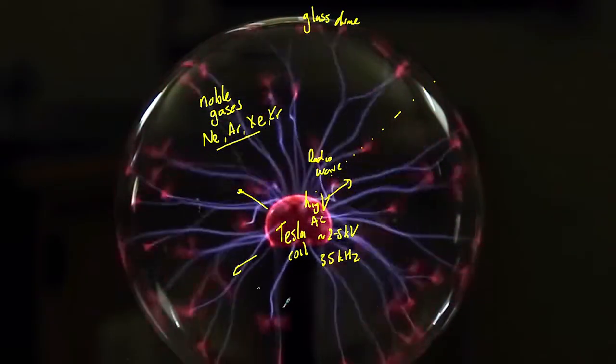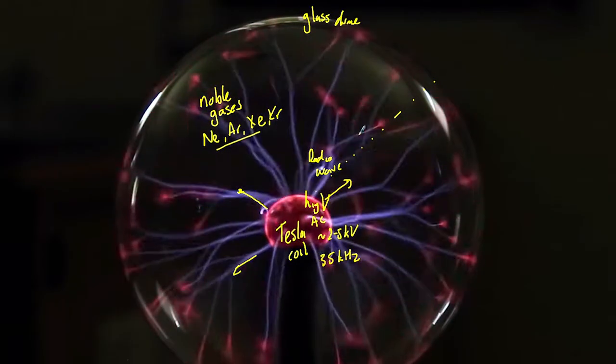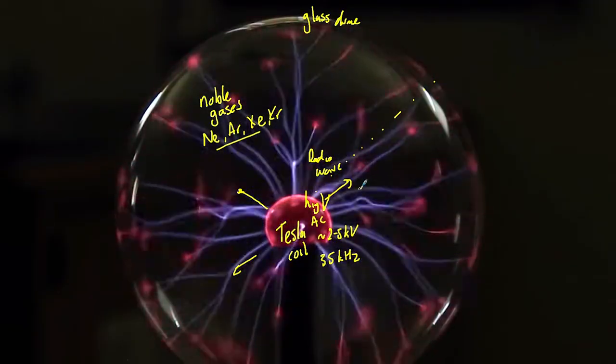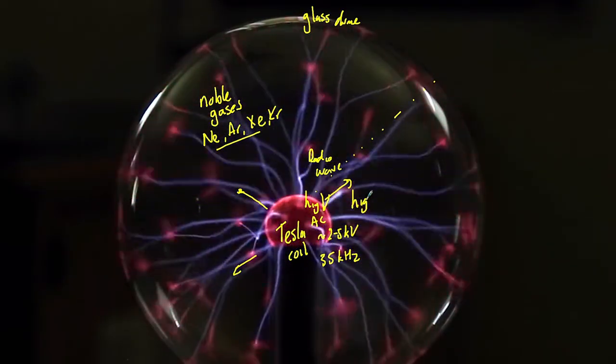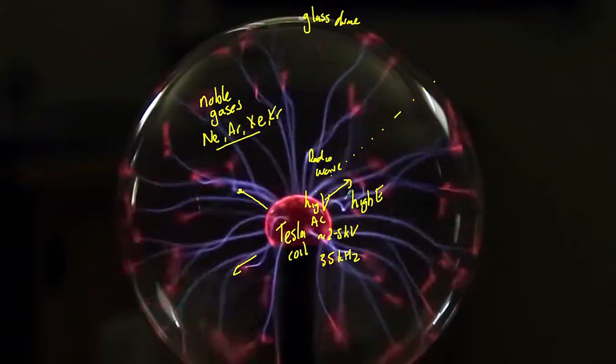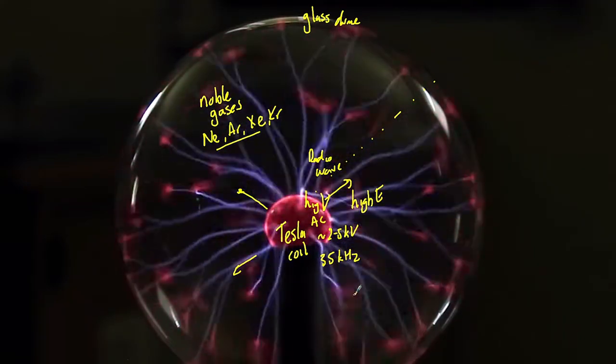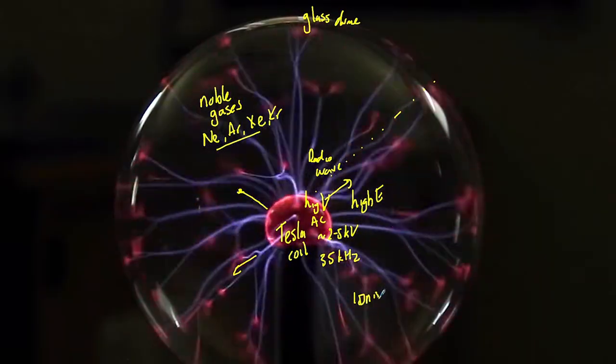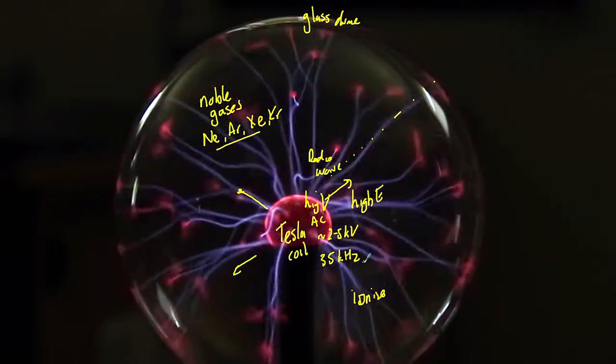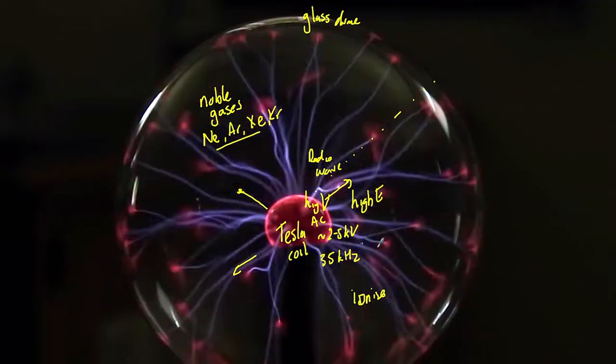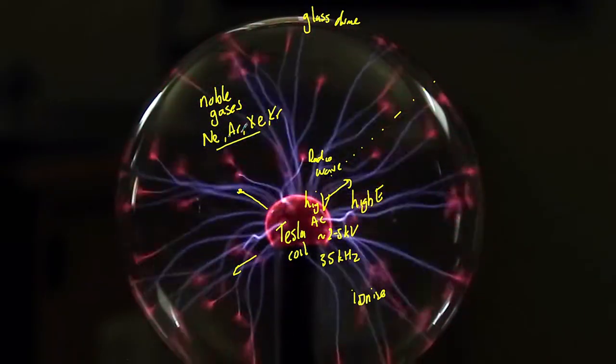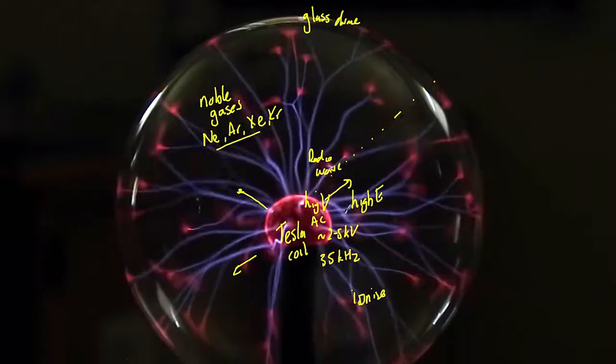So what about this material here? Well, the radio wave that is emanating out is actually quite high in energy. As a result, it causes the gases here to ionize. Now what do I mean by ionize? Ionize in essence is that the electrons are being ripped off the atoms of the neon, argon, xenon, and krypton.